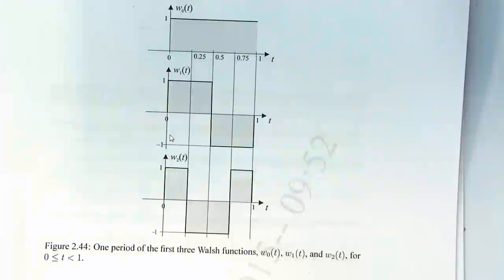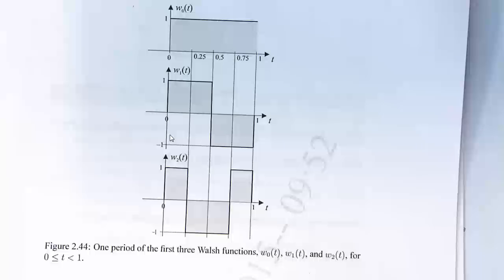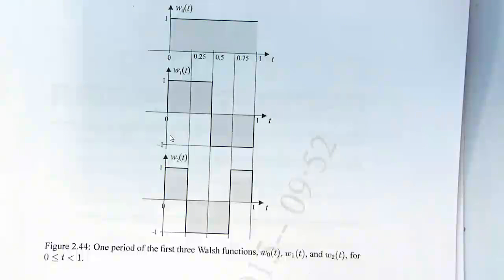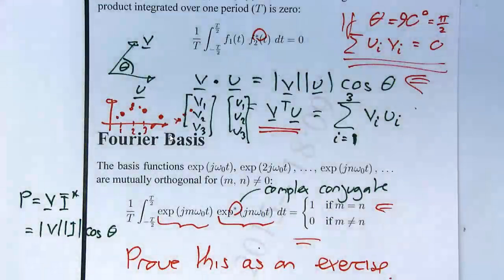However, there are other waveforms where the first 200 Walsh functions give a better approximation — for example, signals that are staircase-like or digital in nature, multi-alphabet signals, or the output of a digital-to-analog converter before filtering. Also, even if Fourier is a more efficient representation in terms of coefficient count, Walsh functions might be more efficient in terms of implementation — for example, providing a faster implementation on an FPGA that can manipulate binary signals more efficiently than sines and cosines. There are always trade-offs between the two.